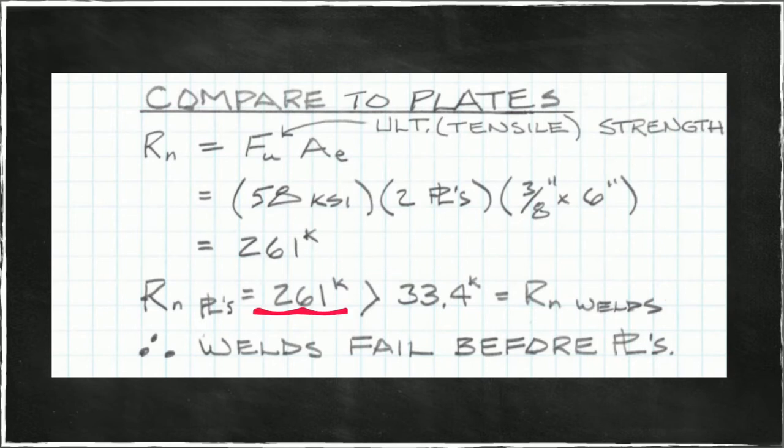Compare the 261 for the plates to the 33 kips we calculated for the welds. 261 is considerably larger than 33, so we expect the welds to fail before the plates.